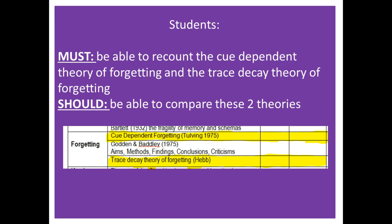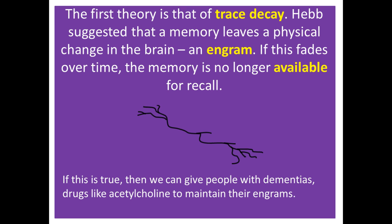The first theory is trace decay — a very basic theory. It suggests that a memory leaves a physical change called an engram. If the engram fades, the memory is no longer available. Evidence comes from a rather unpleasant experiment by Lashley in 1931: he trained rats to learn mazes for food, then cut out parts of their brain. The more he cut out, the more the rats forgot, indicating a physical storage problem.